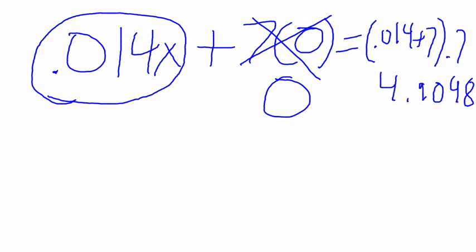Now what we got to do is get x by itself. Now we just use simple algebra. You divide both sides by 0.014.